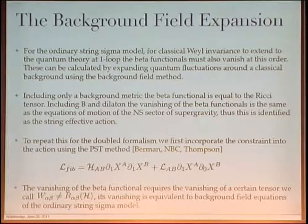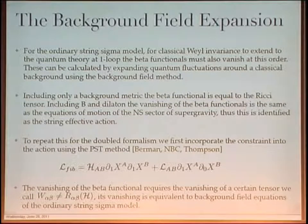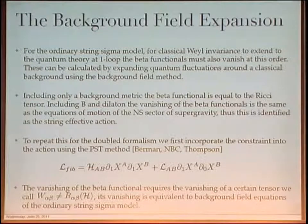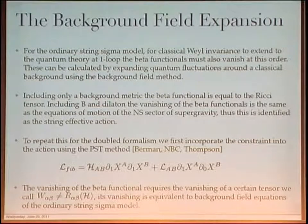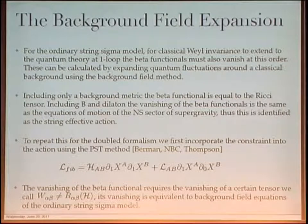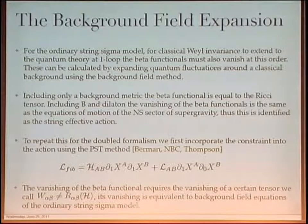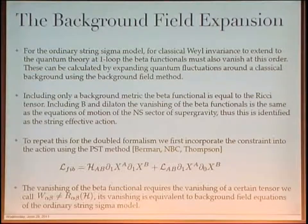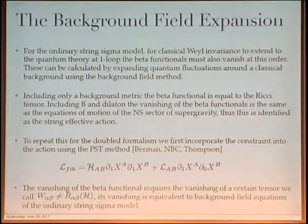Can we do this for the doubled formalism? Back in 2007, along with Dave Berman and Dan Thompson, we did this. We incorporate the constraint into the action using the PST method, obtaining an action where Lorentz invariance is no longer manifest, written in terms of L and H. The vanishing of the beta functional is the vanishing of a tensor W running over all coordinates including the doubled fiber coordinates. This is not the same as the Ricci tensor of the doubled metric H, but plugging in the form of H and L into W shows the equations are equivalent to the original string. So at one loop it is equivalent as well.